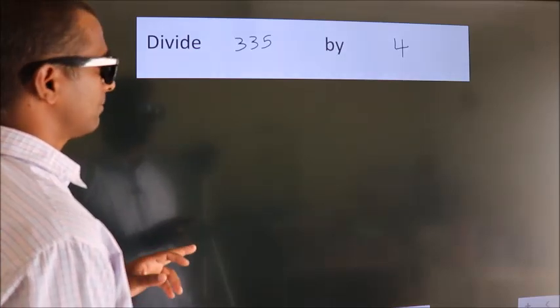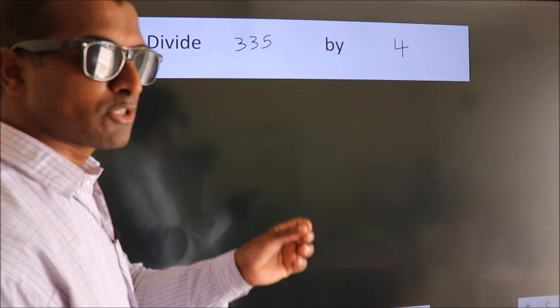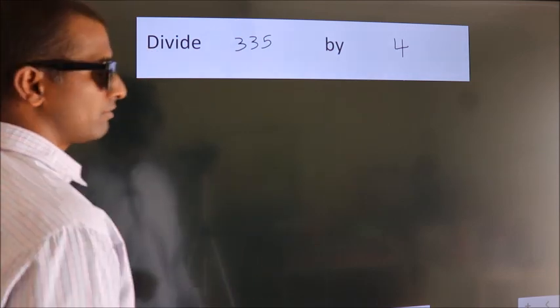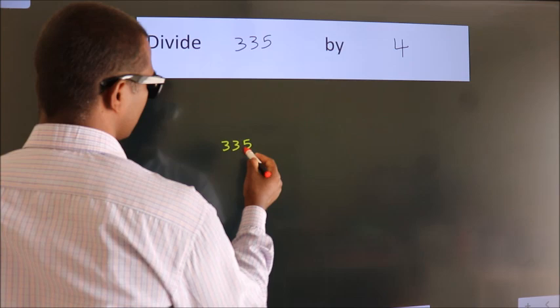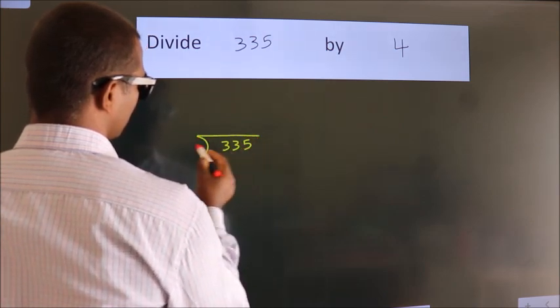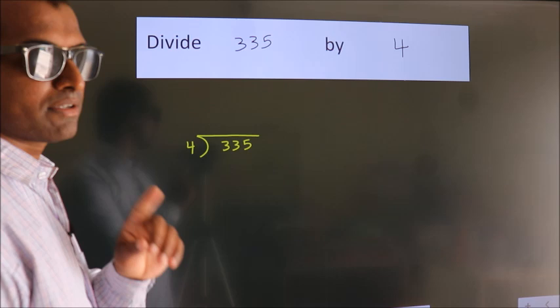Divide 335 by 4. To do this division, we should frame it in this way: 335 here, 4 here. This is your step 1.